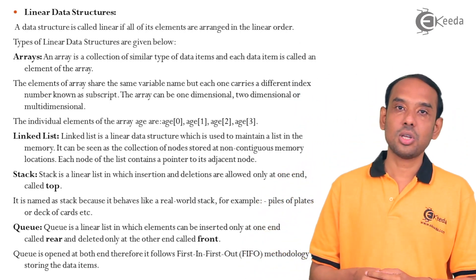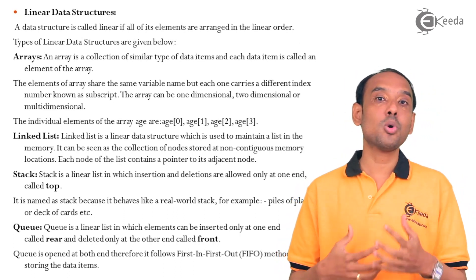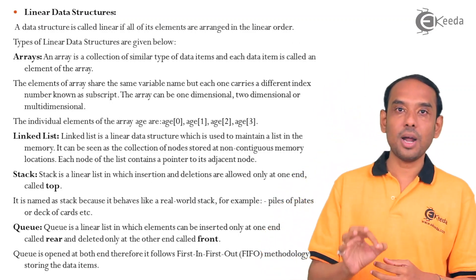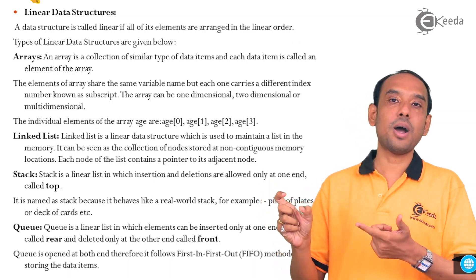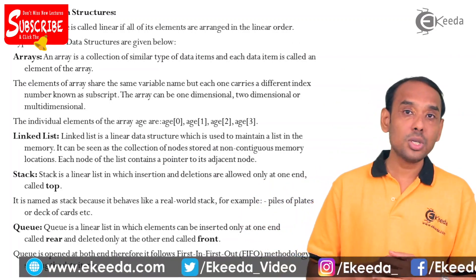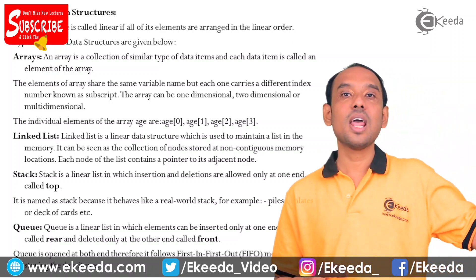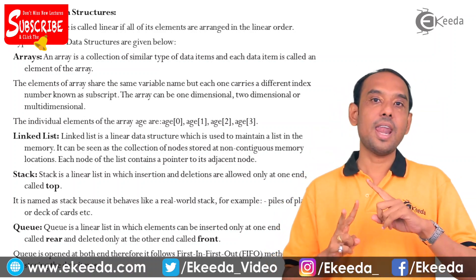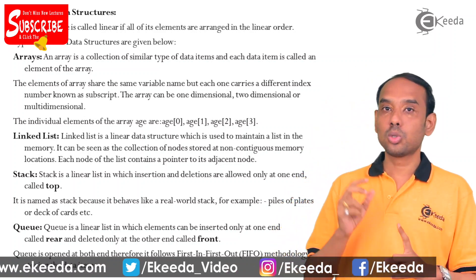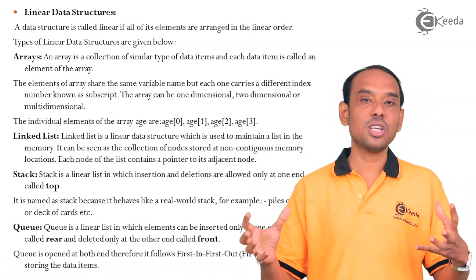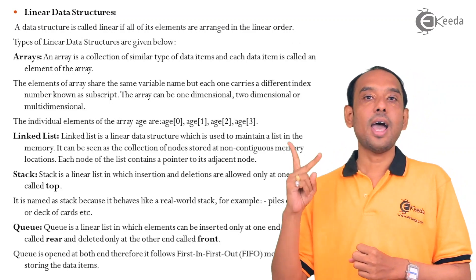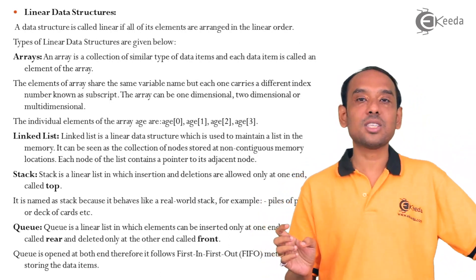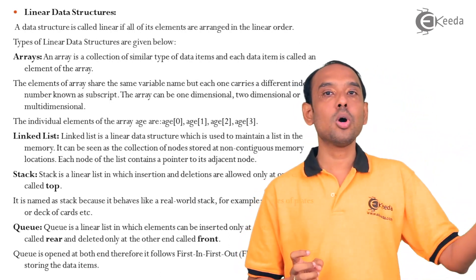The next data type is linked list. A linked list is a node structure. Each node is divided into two subparts: the first subpart is called data, and the second subpart contains an address which is a pointer to the next node. So each node stores data and also the address of the next node it refers to.